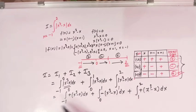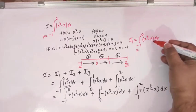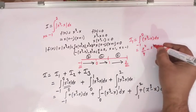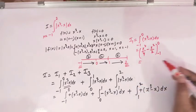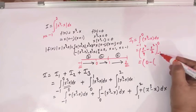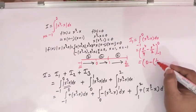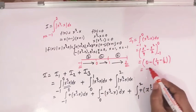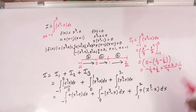Now we can easily solve these three integrals. I1 is the integral from minus 1 to 0 of (x cubed minus x) dx. The antiderivative is x⁴ over 4 minus x² over 2, evaluated from minus 1 to 0. When x equals 0 the whole term is 0. When x equals minus 1, we get (minus 1)⁴ over 4 minus (minus 1)² over 2, which is 1/4 minus 1/2. So I1 equals 0 minus (1/4 minus 1/2) = 1/4.